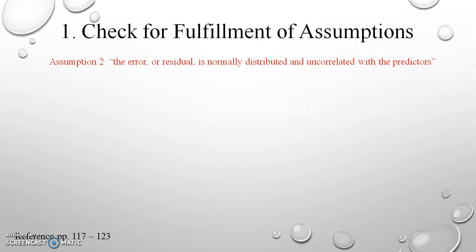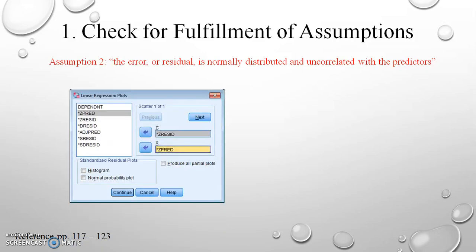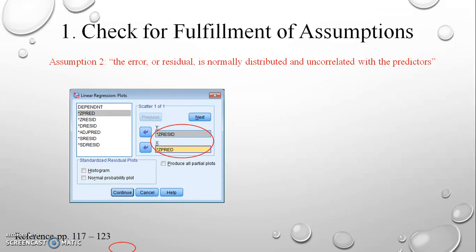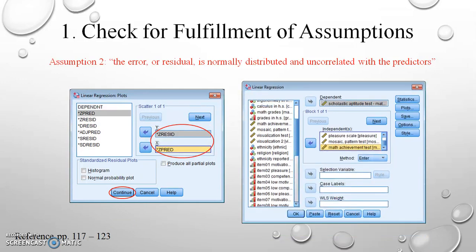The linear regression plots dialog box appears. Because I am interested in the relationship between the predictor variables and the residual, I assigned Z Residual to the Y axis and Z Predictor to the X axis. I click Continue and return to the linear regression dialog box, then select OK to exit.